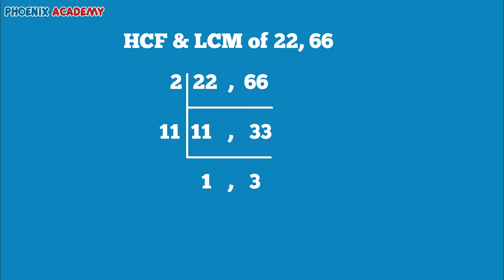Now we are going to find out HCF and LCM of these two numbers. To find the HCF of these numbers, we multiply all the common prime factors of the given numbers. Here the common prime factors are 2 and 11, so we got 22 as the HCF.